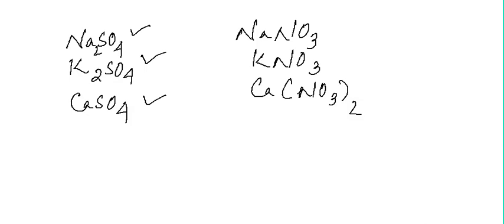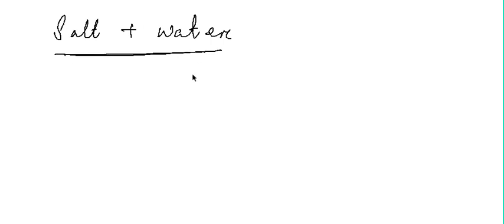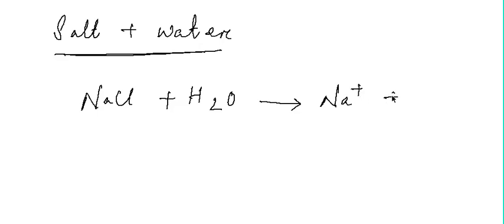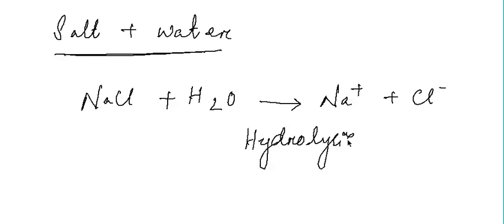When salts are dissolved in water, they produce ions — for example, NaCl dissolved in water produces Na⁺ and Cl⁻. We say that salts undergo hydrolysis. NaCl is a salt of a strong acid and a strong base.